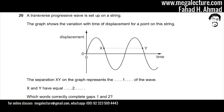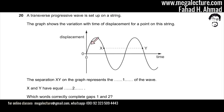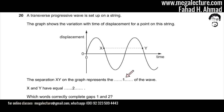The following question states that a transverse progressive wave is set up on a string. There's a wave and it's a transverse wave — the string is vibrating to and fro. The graph shows the variation with time of displacement for a point on the string. The separation x, y of the graph represents a dash of the wave.